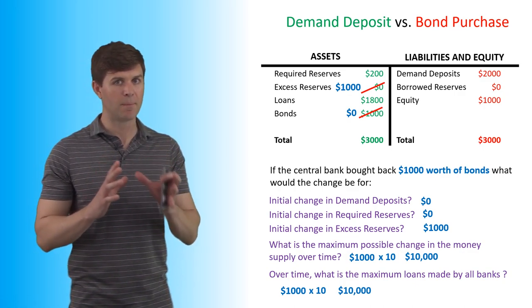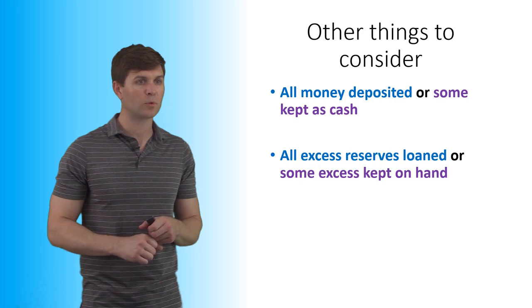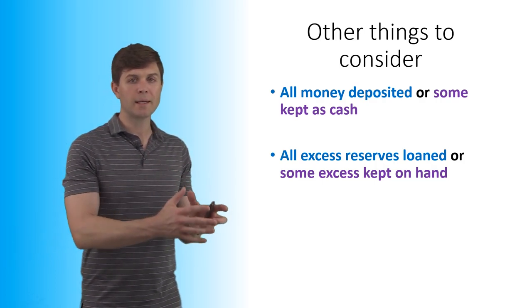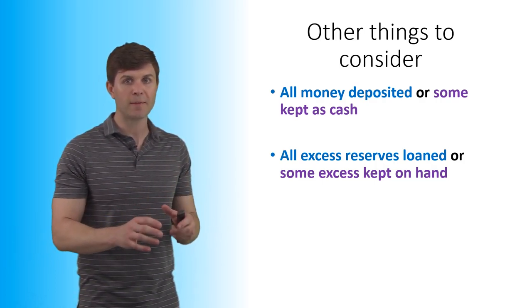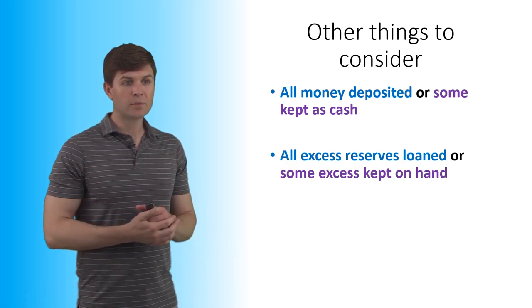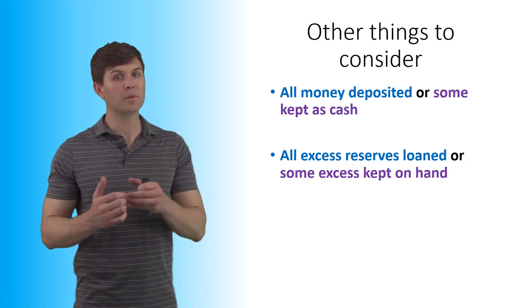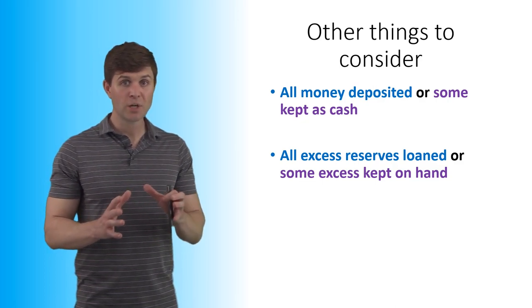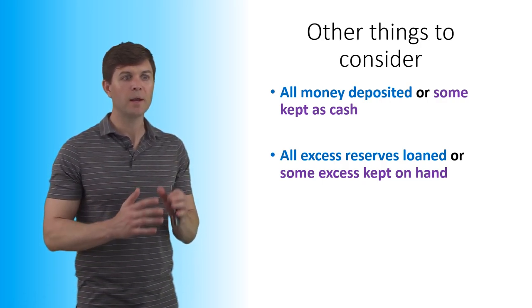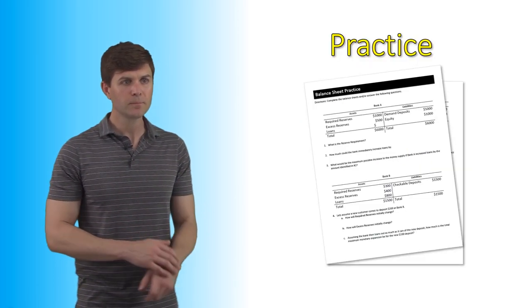So the big things to pay attention to are: overtime versus immediate changes, and demand deposit increase versus bond purchase by the central bank — those distinctions make your answer right or wrong. Also consider whether all money will be deposited back into banks, or whether people hold some cash. And whether all excess reserves are loaned out or banks hold some back. Anytime money is kept as cash or banks don't loan out all excess reserves, it reduces the money multiplier.